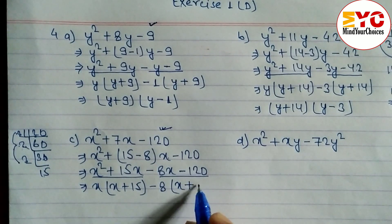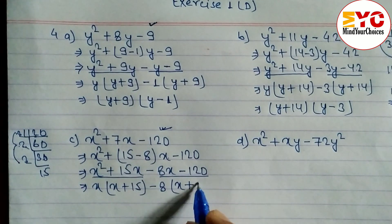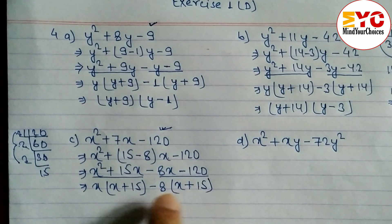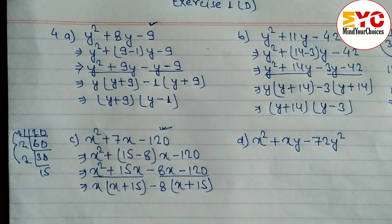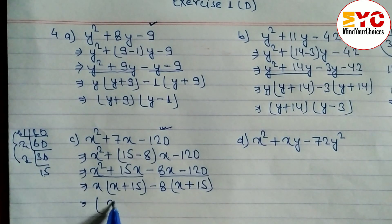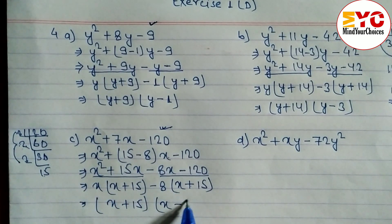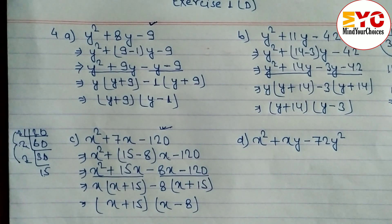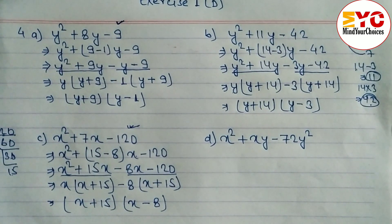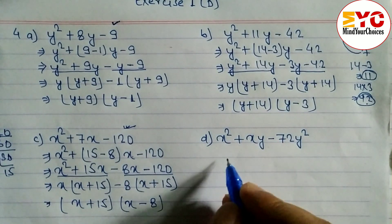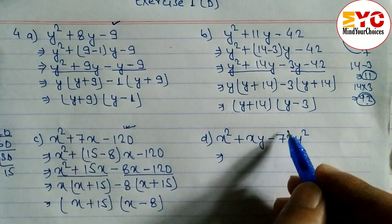From -8x - 120, take -8 common. When minus is common, change the sign: 8 × 15 = 120, so it becomes -8(x + 15). Both groups have (x + 15), confirming correctness. Taking (x + 15) common, the answer is (x + 15)(x - 8). That completes problem C.